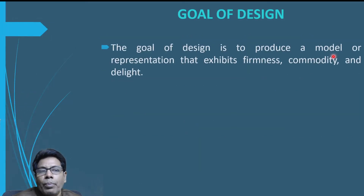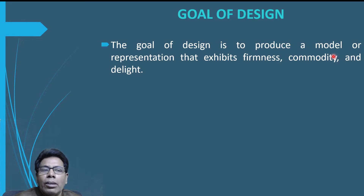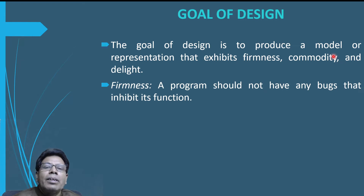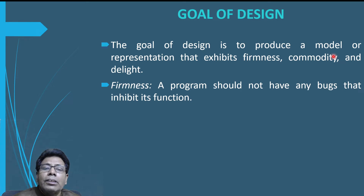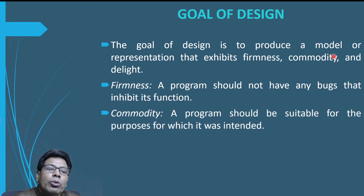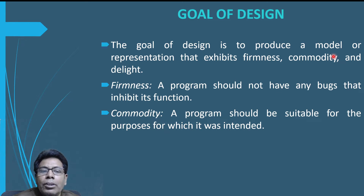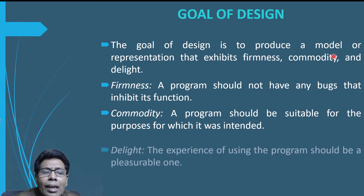The goal of design is to produce a model or representation that will exhibit firmness, commodity and delight. What is firmness? A program should not have any bugs that inhibit its function — that is firmness, or robustness. The program should be robust so that it can perform its function well and should not contain any bugs. Then commodity: a program should be suitable for the purpose for which it was intended. The main purpose for which we are writing the program should be clear and the program should be suitable for that.